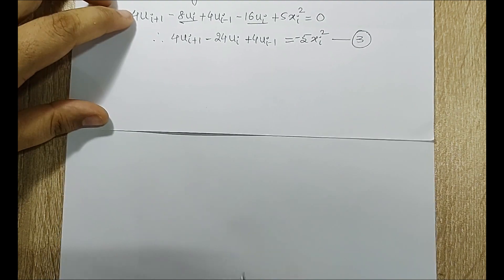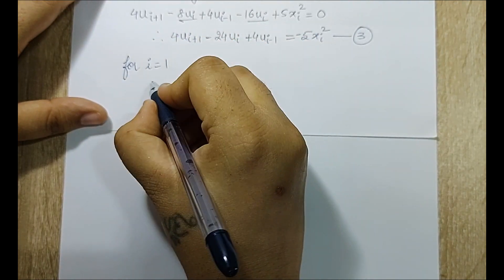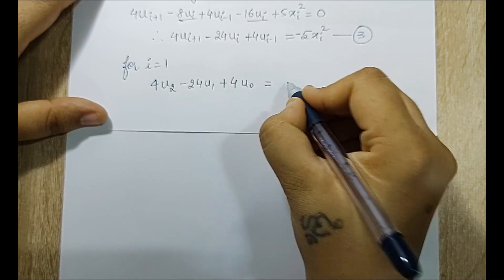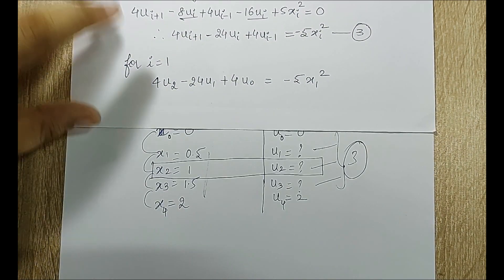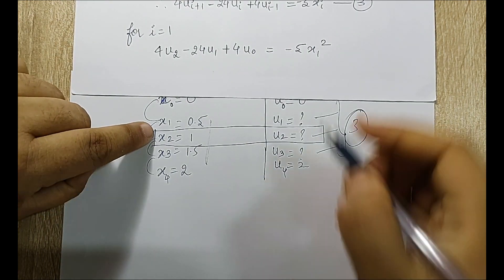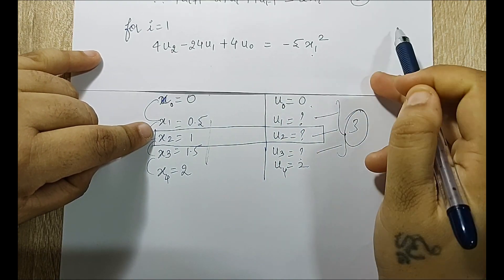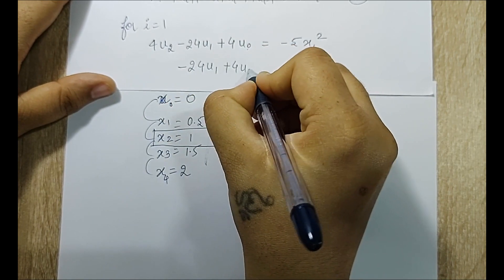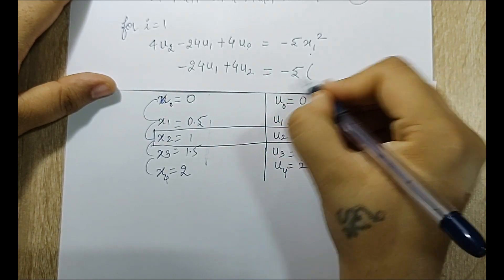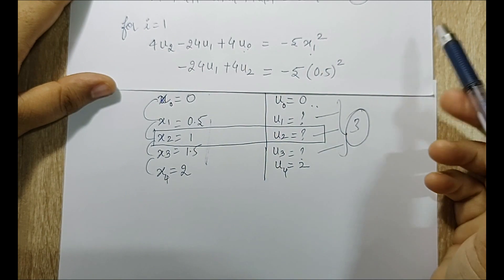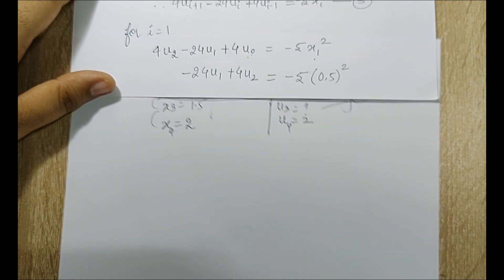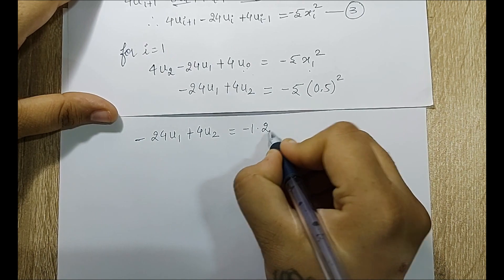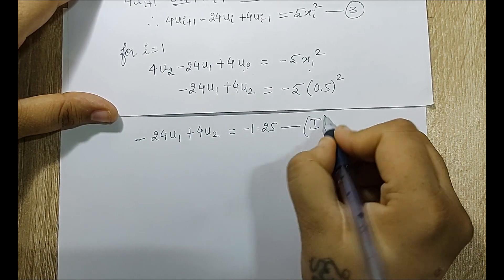For i = 1: substituting into equation 3 gives 4u₂ − 24u₁ + 4u₀ = −5·(0.5)². Since u₀ = 0, this simplifies to −24u₁ + 4u₂ = −1.25. I mark this as equation 1 (system).